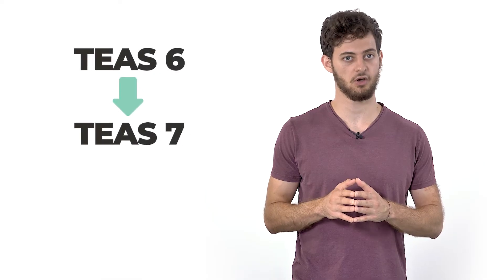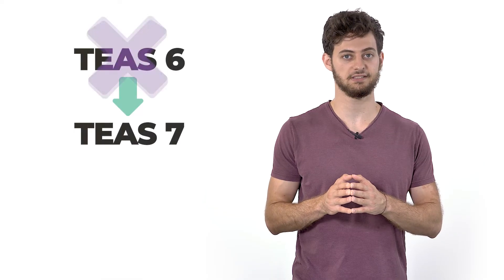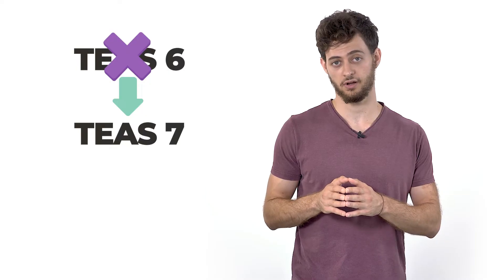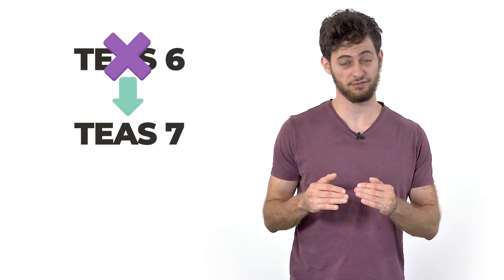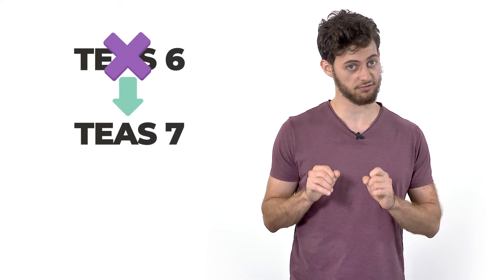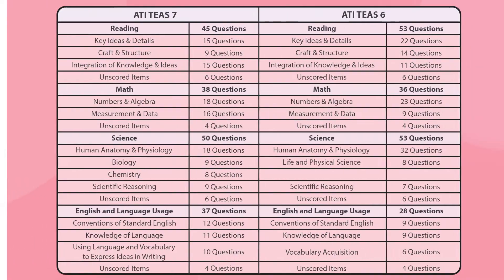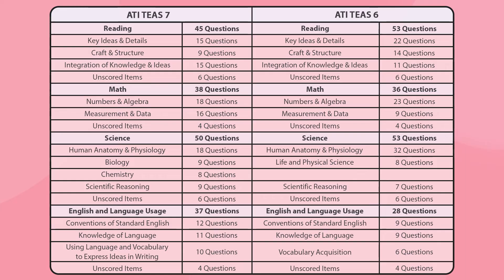In 2022 a new version of the TEAS was adopted called the TEAS 7 replacing TEAS 6. Therefore make sure that whatever you use to prepare for the test is updated to TEAS 7. The TEAS 7 keeps the general format of the TEAS 6 meaning that the four sections remain the same as well as the total number of questions and the time limit. What has changed is the number of questions in each section and subsection. The following table shows you all the precise changes.